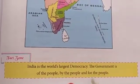Question 3: Who is the head of our country? Who is the head of the state? President is the head of our country. Chief Minister is the head of the state. Question 4: Write a few lines about the parliament. The law-making body of the central government is called the parliament. The two houses of the parliament are the Lok Sabha and the Rajya Sabha.